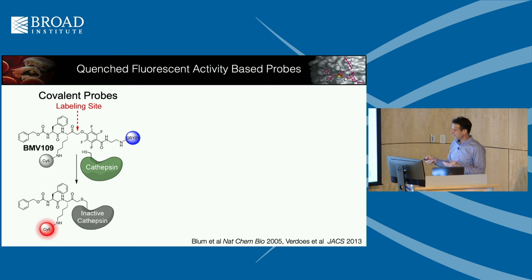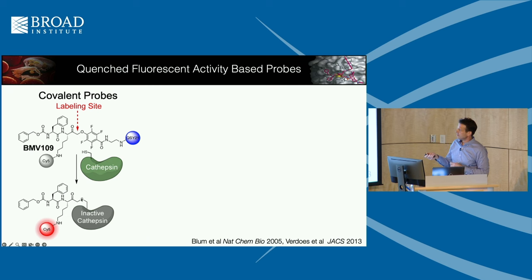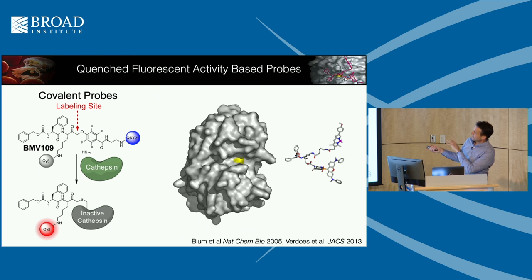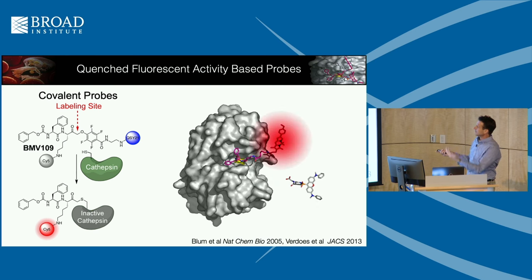We could put a fluorophore on these molecules — but could we also put a quencher on them? Using initially acyloxymethyl and then phenoxymethylketones, what happens is the thiol in the active site attacks the carbonyl, migrates to that carbon, and kicks out the whole quencher-containing part of the molecule as a leaving group, generating a stable thioether linkage. Now we can put a fluorophore on one end and a quencher on the other — when covalent chemistry happens, the fluorophore turns on. It's a smart probe.